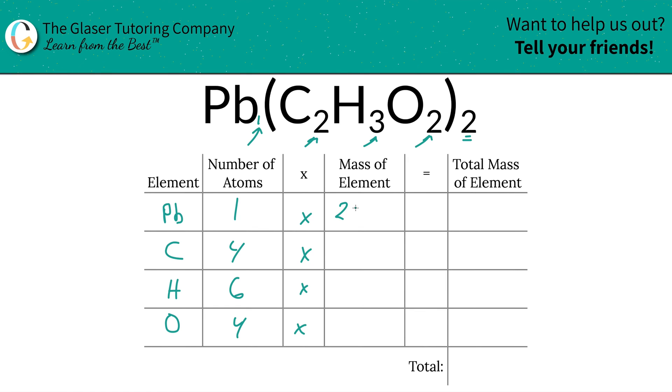All right. So those are the numbers we're going to write down. 207.20 for lead, carbon, 12.01, hydrogen, 1.01. You do enough practice, you'll actually begin to kind of memorize these numbers. Not that you really need to, because you should have a periodic table.